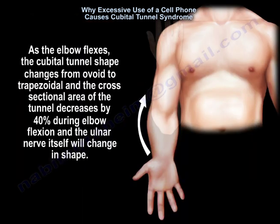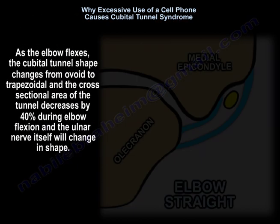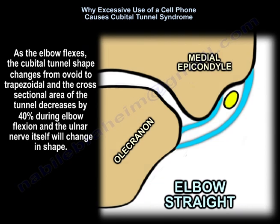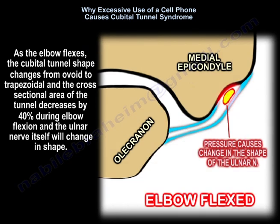As the elbow flexes, the cubital tunnel shape changes from ovoid to trapezoidal, and the cross-sectional area of the tunnel decreases by 40% during elbow flexion, and the ulnar nerve itself will change in shape.